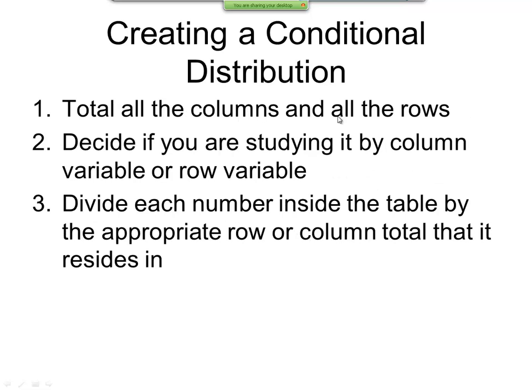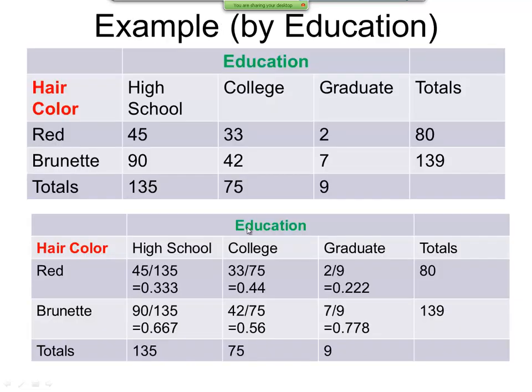Now how we do this is we total all the columns and all the rows. Decide if you're setting it by column variable or row variable. And divide each number inside the table by the appropriate row or column total it resides in. Now for example, we've got our original table here. And we're going to look at this by education. So we've added the columns, added the rows just like before. Now notice we don't worry about the grand total on this particular type.